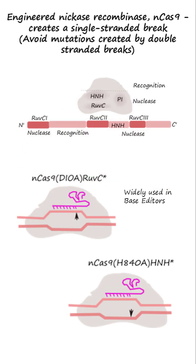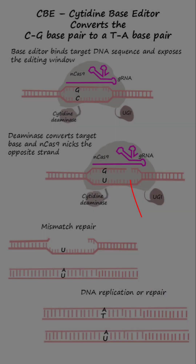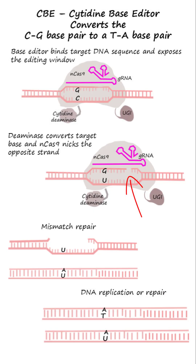The modified Cas9 nickase — nickase-Cas9, or nCas9 — creates a single-stranded break instead of double-stranded breaks, thus reducing the probability of unintended mutations. The single-stranded break created by nCas9 on the strand not being edited forces the cell to use the strand with the edit as the template for repair.